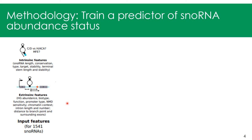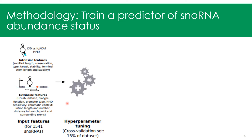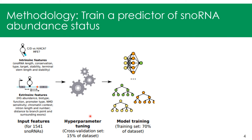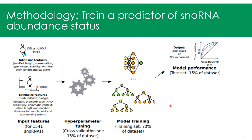These input features were fed to the models. The first step was to tune the hyperparameters of these models on a cross-validation set comprised of 15% of all SNORNAs. I then trained them on a training set composed of 70% of all SNORNAs, and finally evaluated their performance to choose the best-performing model as the best classifier of abundance status.